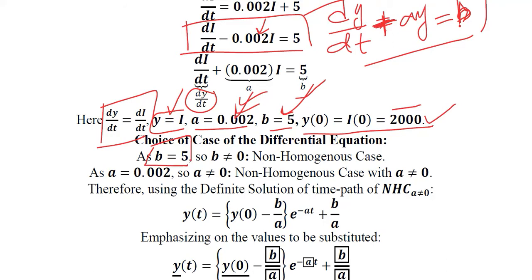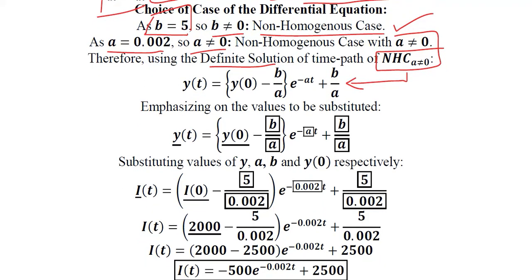We see that b is non-zero which means that we are dealing with the non-homogeneous case. Now we have to see the value of a which is again non-zero. This means that a is not equal to zero in this non-homogeneous case, which implies that the definite solution will have this formula. These are the values that need to be substituted. The values of b and a are substituted wherever they were to be substituted.